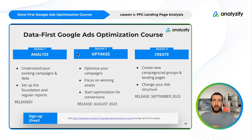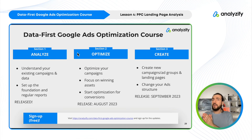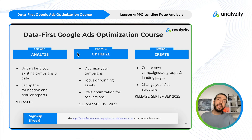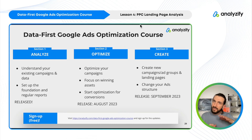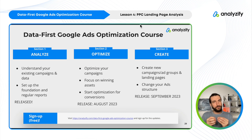Let's talk about our course structure. We are in Section 1: Analyze. We've now done landing page analysis in both Google Ads and GA4. Do this at the campaign level too — choose the campaign you spend the most on and run the same reports. Use different timeframes, check often — this is an ongoing process. In the next section we'll cover how to optimize campaigns based on what we've learned: pausing losing assets, bidding more on winning ones, or creating separate campaigns for top performers.